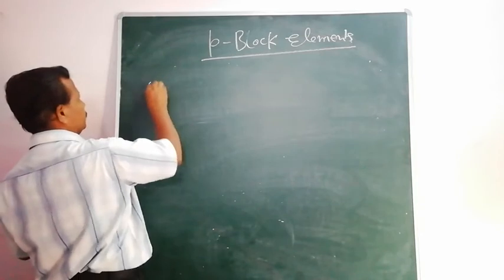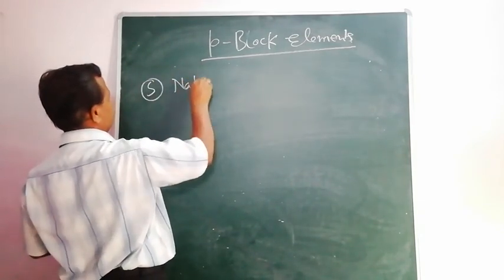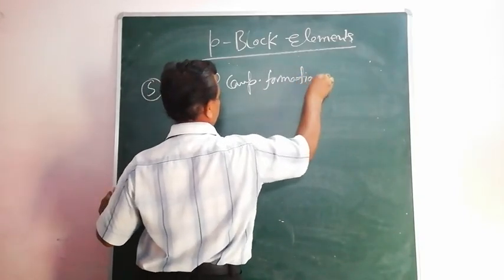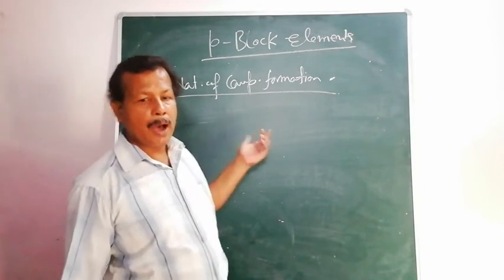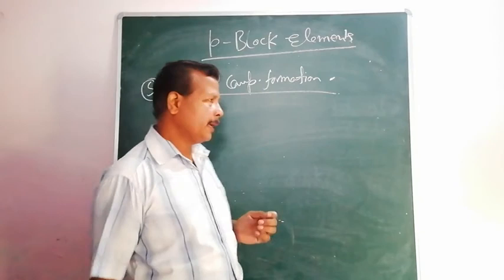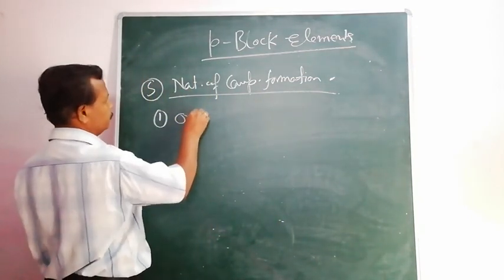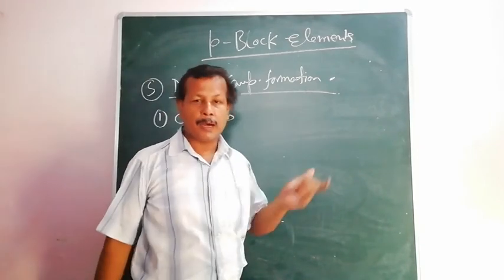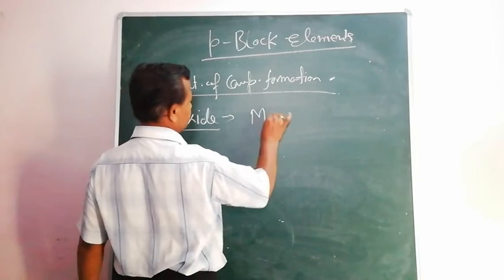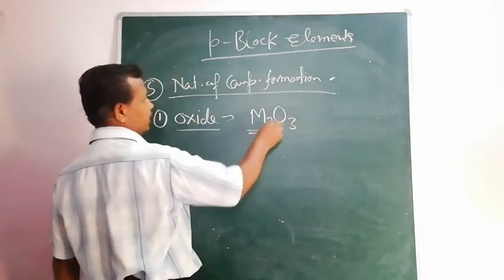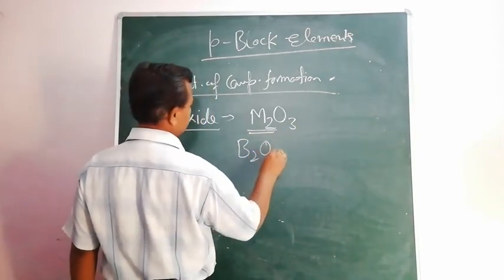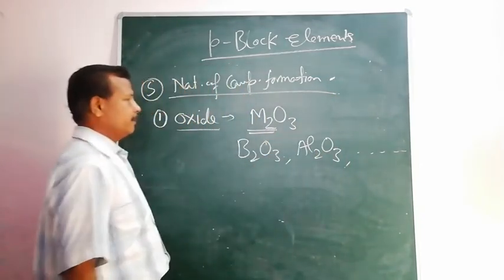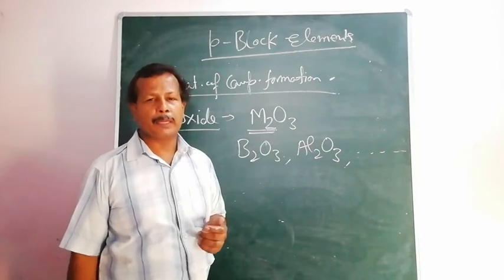A very important factor is the nature of compound formation. In general, all these elements form the same type of compounds. As oxides, they form M₂O₃ type oxides, where M is the element of the 13th group. For example: B₂O₃ (Boron oxide), Al₂O₃ (Aluminium oxide), Gallium oxide, etc.